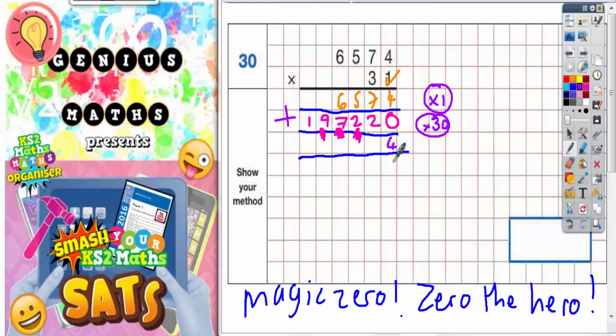So four add zero is four. Seven add two is nine. Five add seven is seven. Six add seven is thirteen. Put the three in, carry the one. Nine add one is ten.